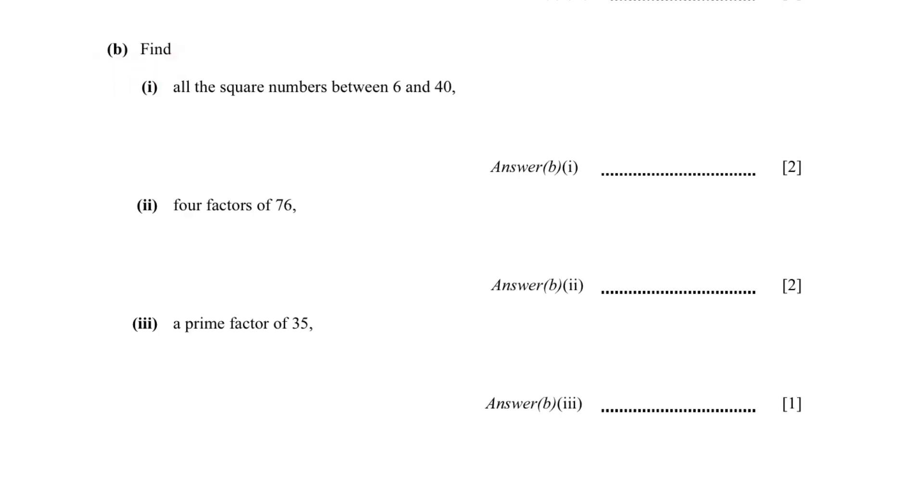In B you have to find all the square numbers between 6 and 40. You know that 2 square is 4, so we will not be able to use that as our range is between 6 and 40. So we will write 3 square, 4 square, 5 square, 6 square, and these numbers will give us 9, 16, 25 and 36.